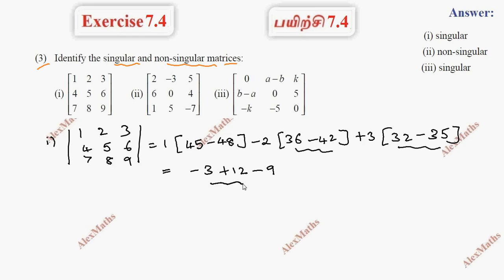This is plus 9, so 9 minus 9 total is 0. Since determinant value is 0, it is singular.